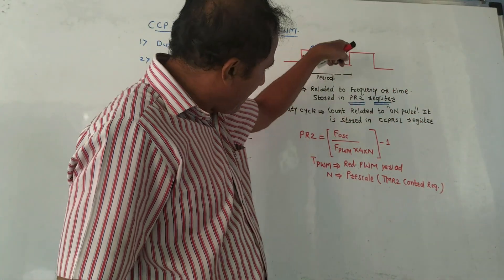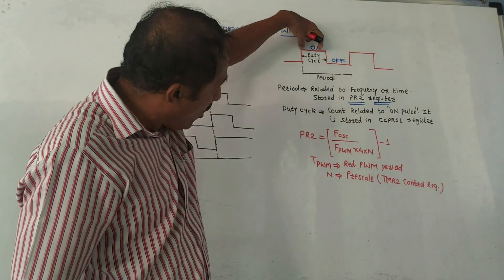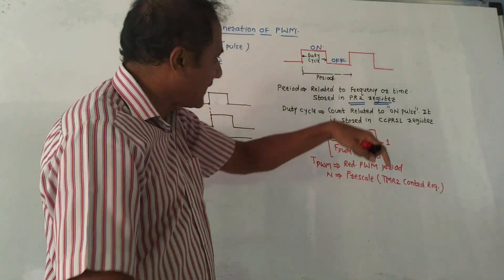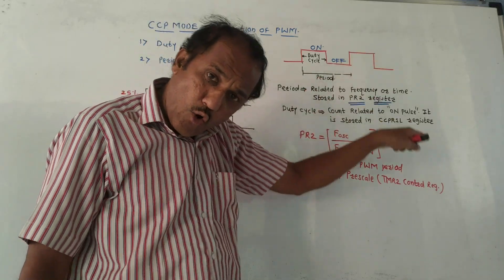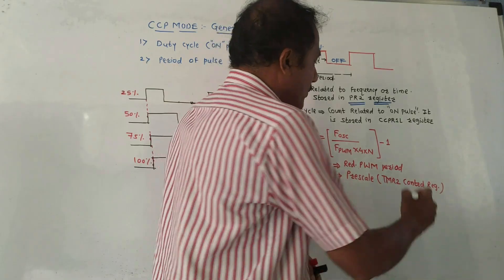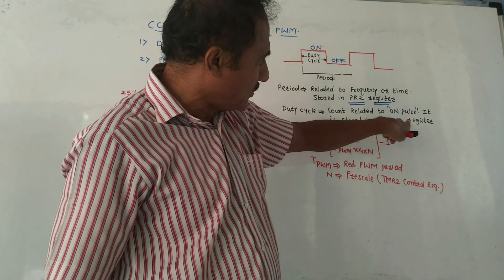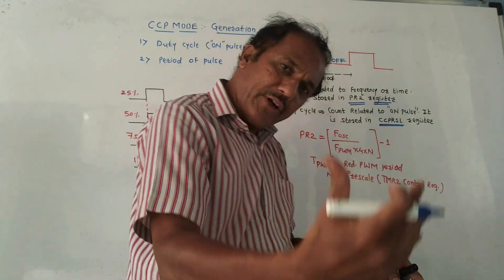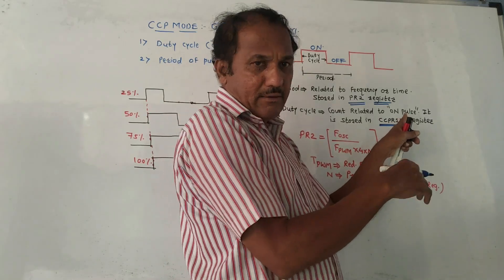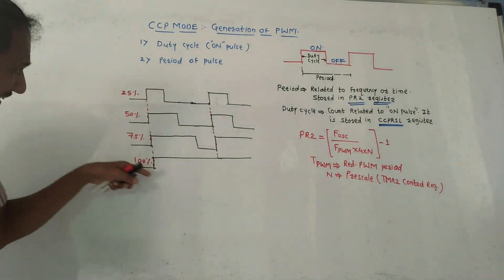The duty cycle is the count related to the on-pulse. This value is stored in the CCPR1L register — that is the lower register of CCPR1. We will explain what the CCPR1L register is in more detail. Now look at this waveform.